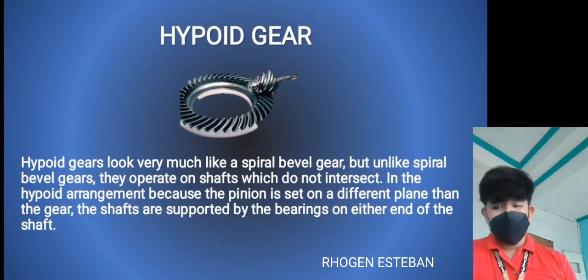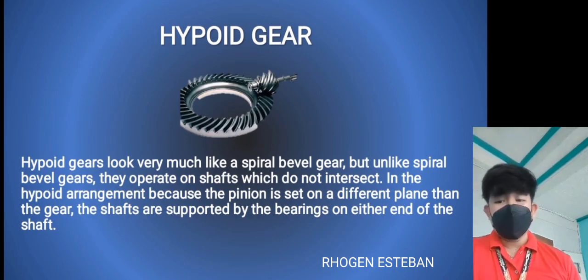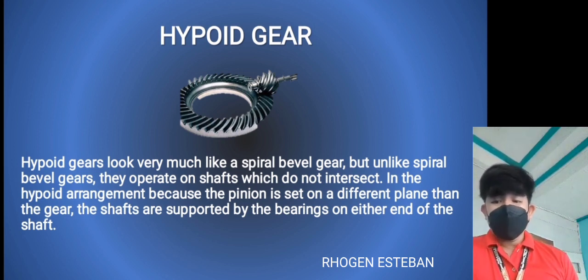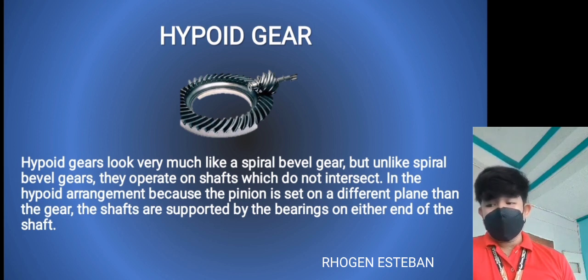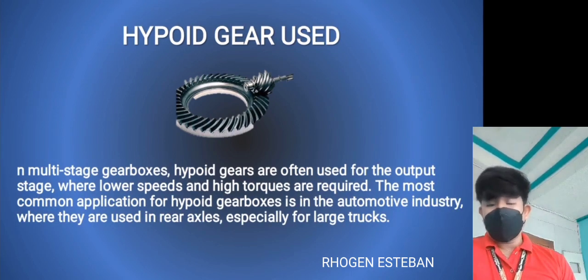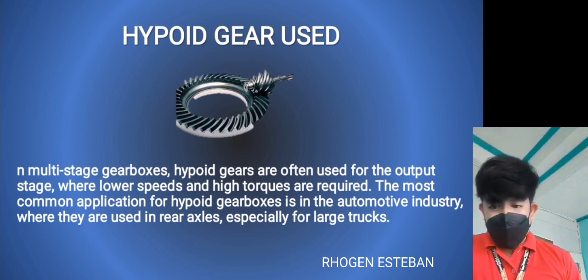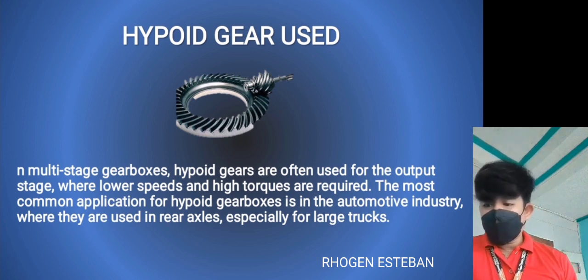Hypoid gears look very much like spiral bevel gears, but unlike spiral bevel gears, they operate on shafts with an offset between the pinion and gear axes — the shafts are supported with bearings on either side. Hypoid gears are often used for output stages where lower speed and higher torque are required. The most common application for hypoid gearboxes is in the automotive industry, where they are used in rear axles, especially for large trucks.